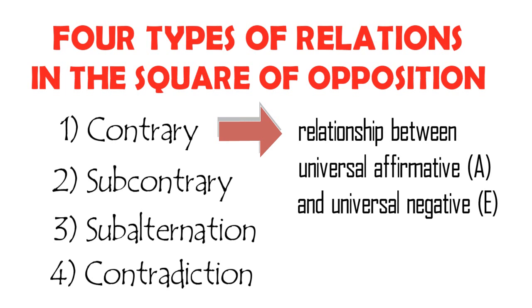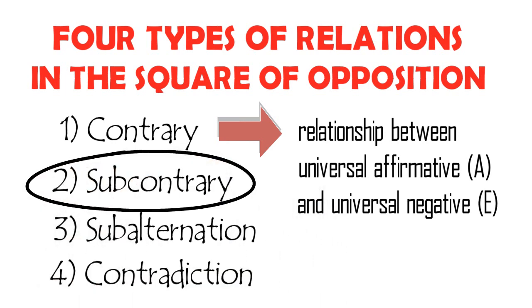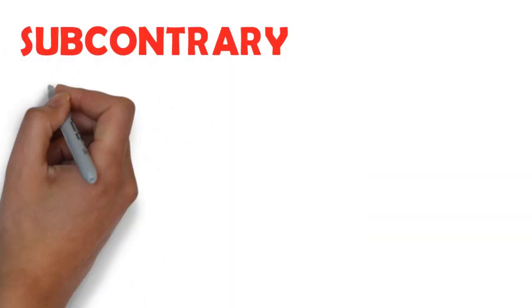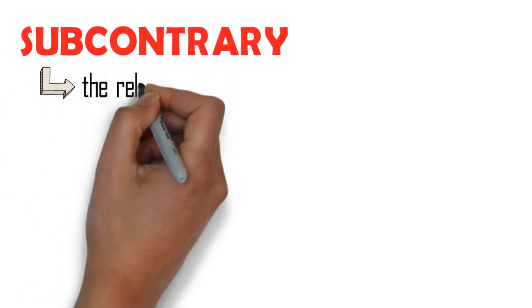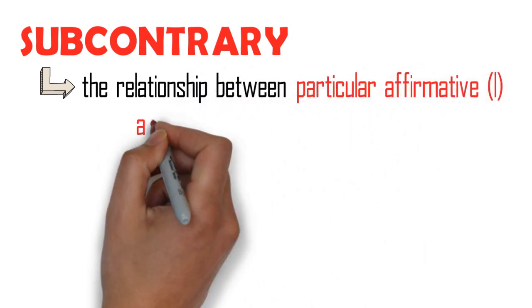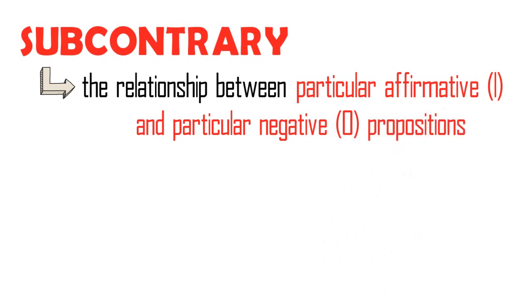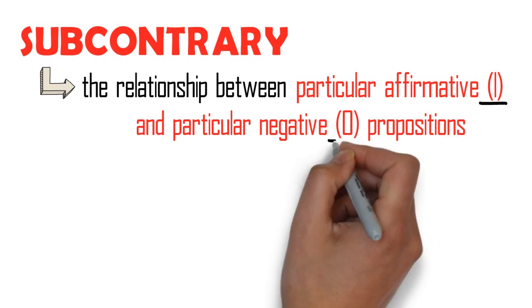Let's talk about the second type of relation in the square of opposition, that is subcontrary. Subcontrary is the relationship between particular affirmative, I, and particular negative, O, propositions. Hence, there is only one pair in subcontrary, that is I and O.